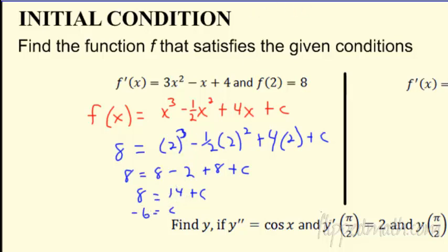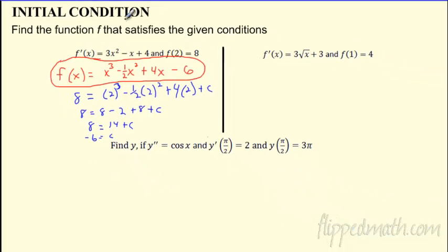So once I have all that information, what do I got to do? I can go back up to my original thing and say, I know what c is. c is actually negative 6. So maybe in this case I'll go ahead and say minus 6. So there is the function.